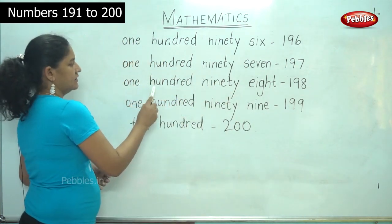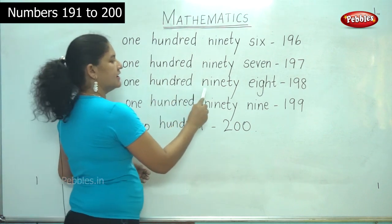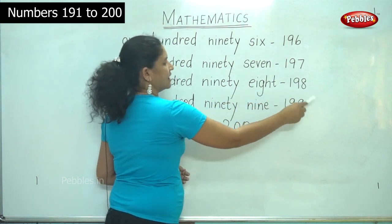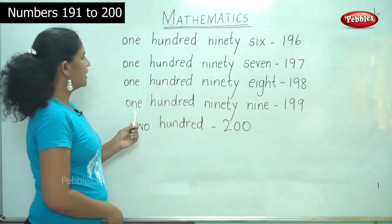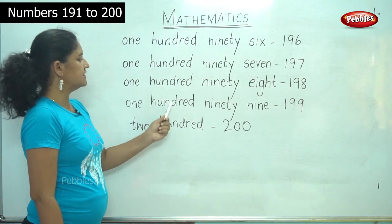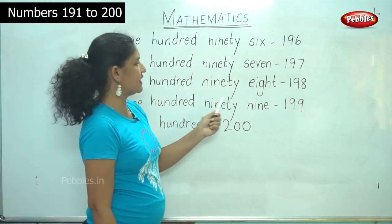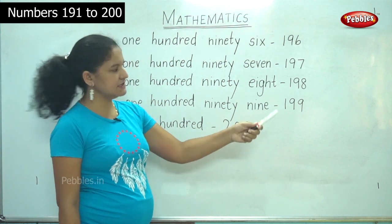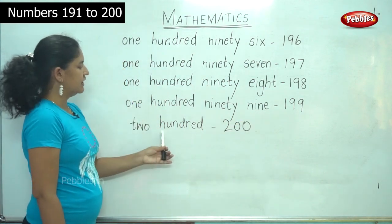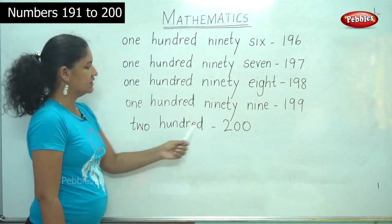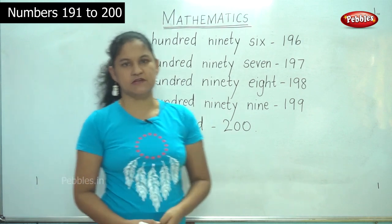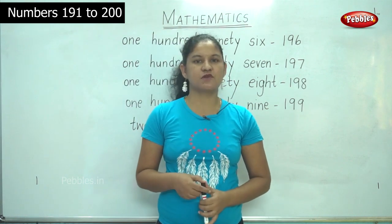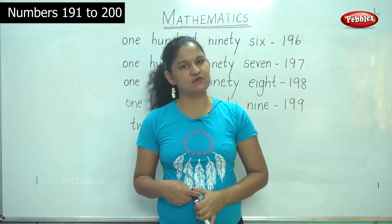198: O-N-E H-U-N-D-R-E-D N-I-N-E-T-Y E-I-G-H-T. 1-9-8. 199: O-N-E H-U-N-D-R-E-D N-I-N-E-T-Y N-I-N-E. 1-9-9. And the last number: T-W-O H-U-N-D-R-E-D. 2-0-0. So now we have learnt to write the numbers and identify them using placards and we have learnt to write the number names for the numbers 191 to 200.